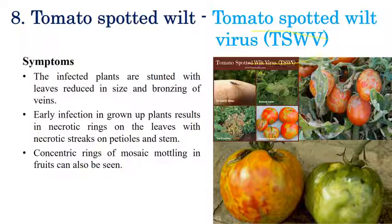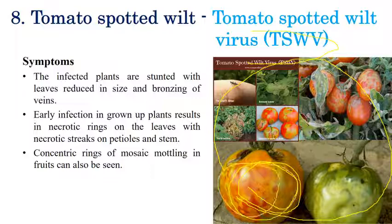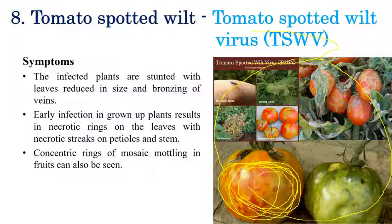The final disease is Tomato Spotted Wilt, caused by Tomato Spotted Wilt Virus (TSWV). Symptoms include stunting of plants, reduction in leaf size, and necrotic rings on leaves in early infection. In later stages it extends to petioles and stems. Mosaic patterns similar to those on leaves can also appear on fruits, along with mottling and concentric rings.